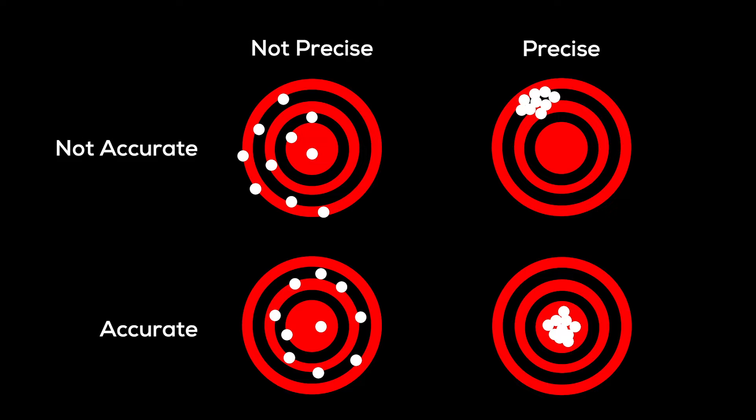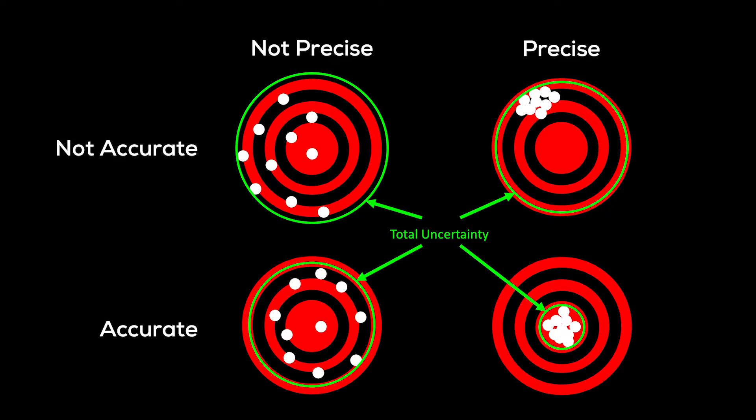We usually express these terms together in a quantity called uncertainty. Uncertainty incorporates the effects of accuracy errors and precision errors, and you can think of it as the circle we have to draw on our dartboard to fully contain all the shots. Uncertainty gives us an idea of how close we can expect our measurements to be to the actual size of the thing we're inspecting.